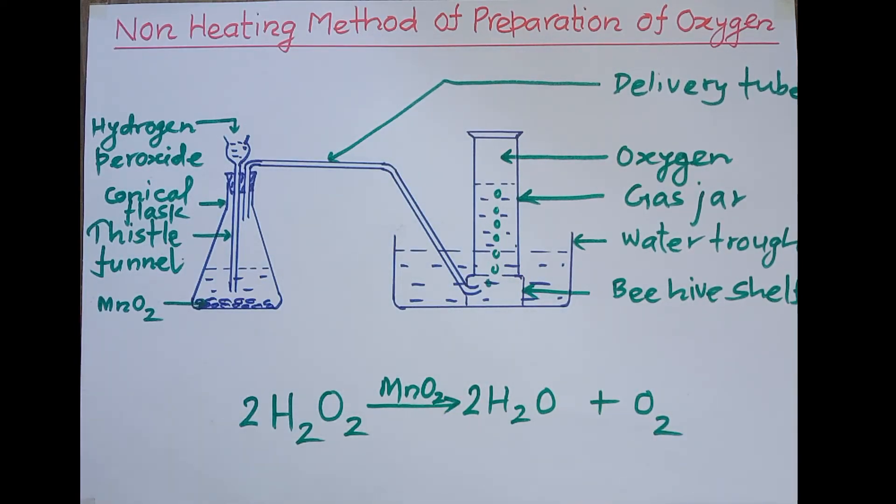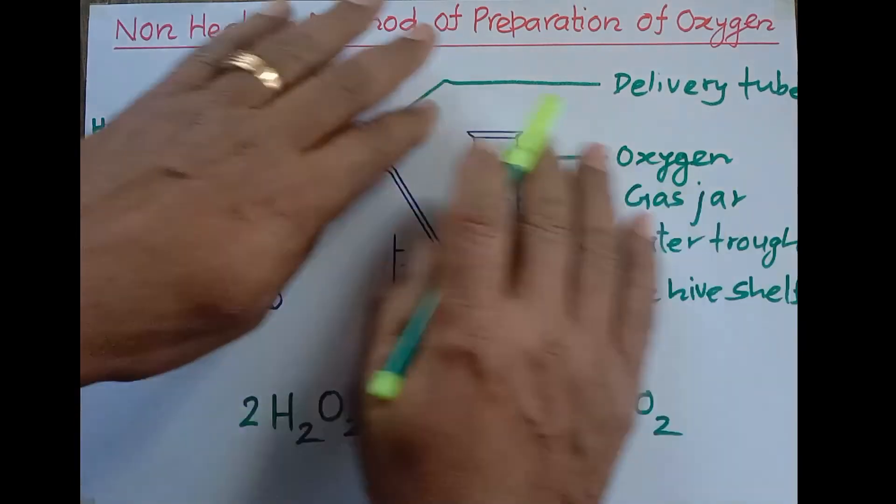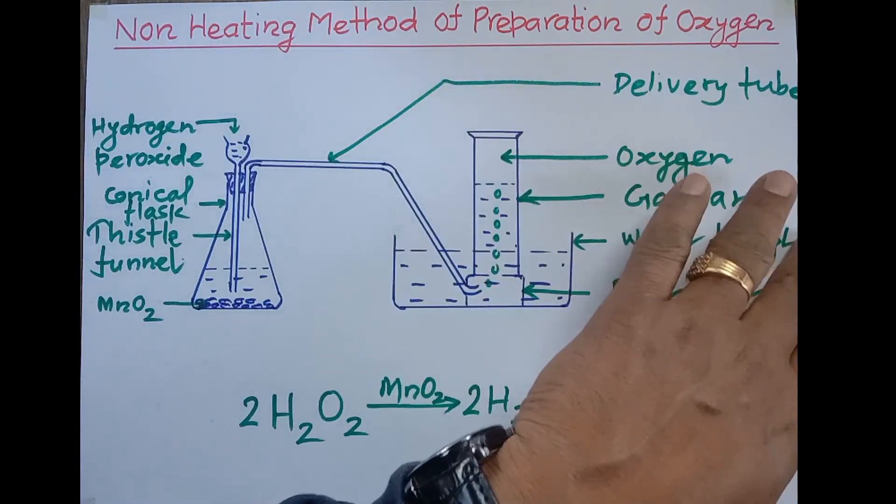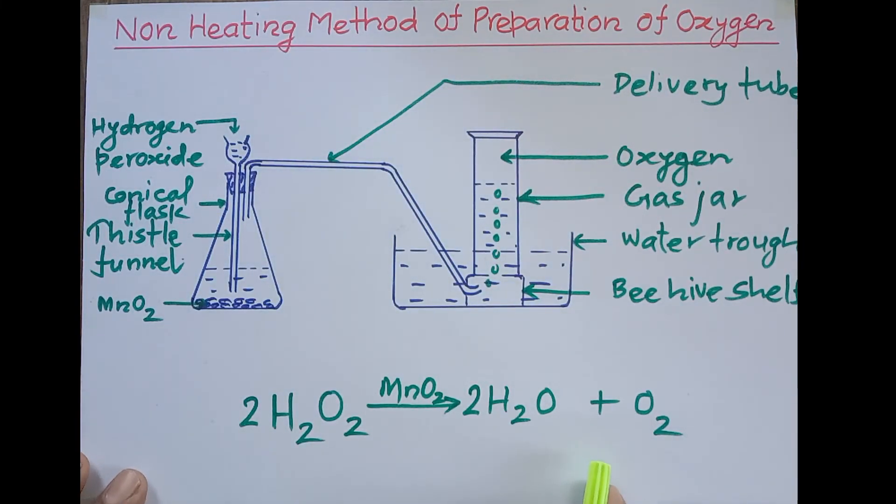We can prepare oxygen gas in laboratory by non-heating method this way, and this is the diagram. If you are asked in examination, you can make this diagram, and this is the chemical reaction which occurs in the preparation of oxygen by non-heating method. This was for today.